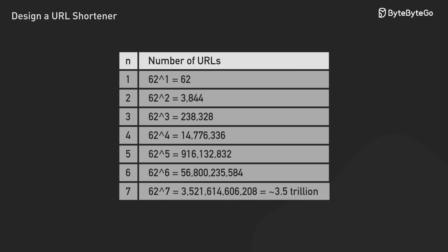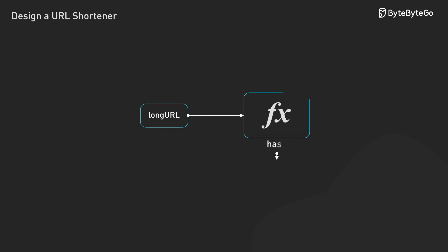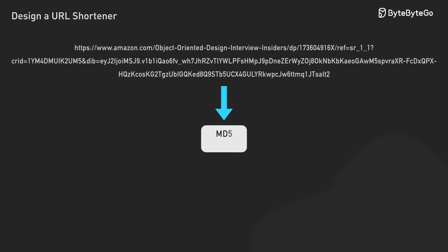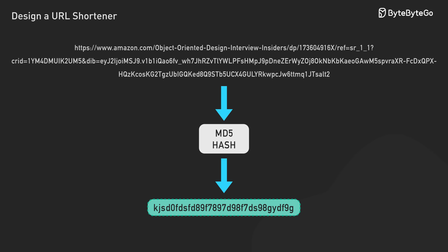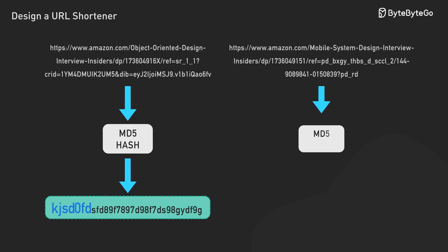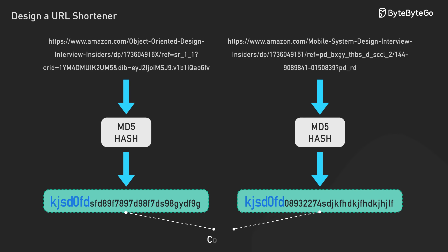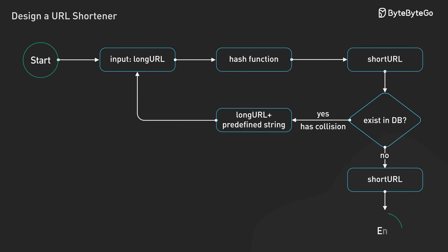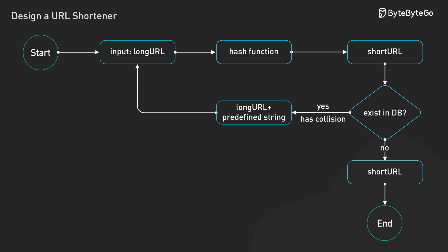But how do we actually create them? There are two approaches and they couldn't be more different. The first approach: just hash the long URL. Take any hash function like MD5, run the long URL through it, and you get back a long string of random characters. The problem? That string is way too long — even the shortest hash gives you 32 characters when you only want seven. So you take the first seven characters and call it a day. But what happens when two different URLs give you the same first seven characters? You've got a collision. You have to try again with some variation of the original URL until you find seven characters nobody else is using. Every time you create a short URL, you have to check if those seven characters are already taken — that's a lot of database lookups.